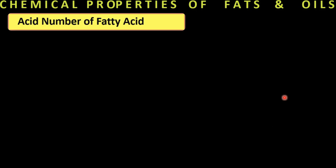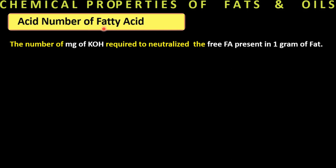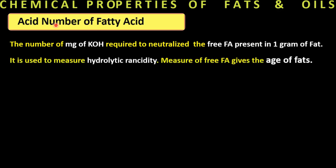Acid number of fatty acids: this is the number of milligrams of potassium hydroxide required to neutralize the free fatty acids present in one gram of fat. It measures hydrolytic rancidity — if a fat is rancid, more free fatty acids are generated, and more potassium hydroxide is utilized. The acid number also gives the age of the fat. For example, castor oil has an acid number of 146–150, cod liver oil 1.1, and olive oil 10.5.